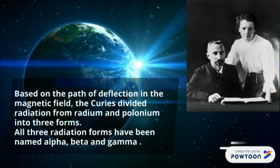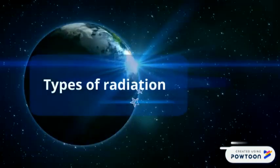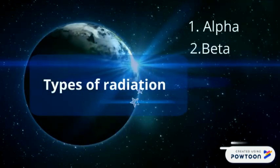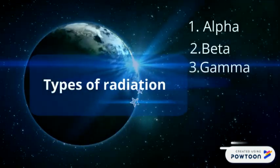Based on the path of deflection in the magnetic field, the Curies divided radiation from radium and polonium into three forms. All three radiation forms have been named alpha, beta, and gamma. We have three types of radiation: alpha, beta, and gamma.